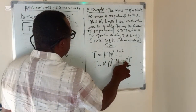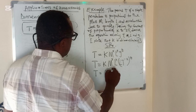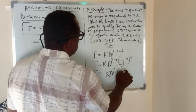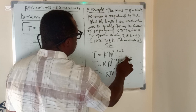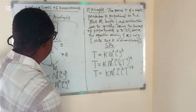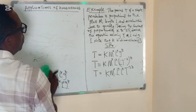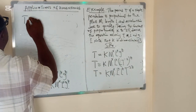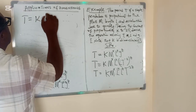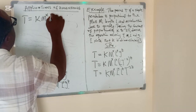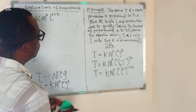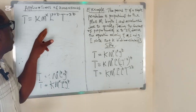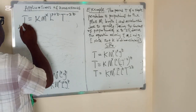By the time we expand this, we have T = K·M^X·L^Y, then Z multiplied by L gives L^Z, and Z multiplied by T^(−2) gives T^(−2Z). Using the knowledge of indices, we can write the L terms together as L^(Y+Z) and T^(−2Z). So now we have the left-hand side and right-hand side of the equation.